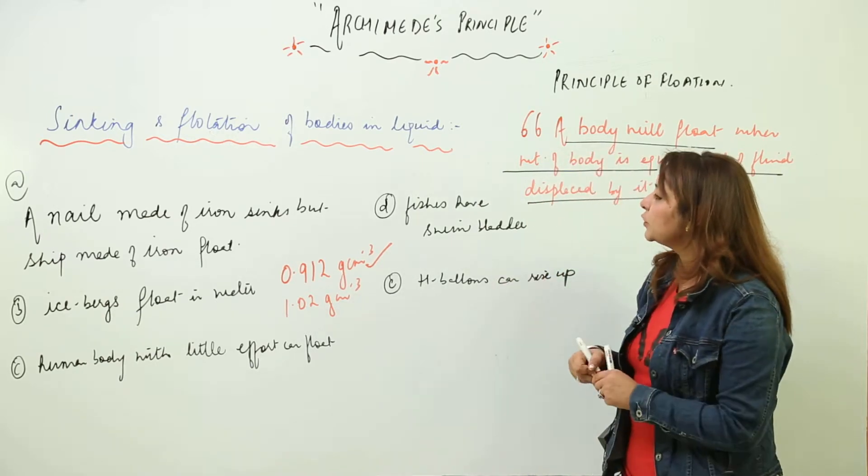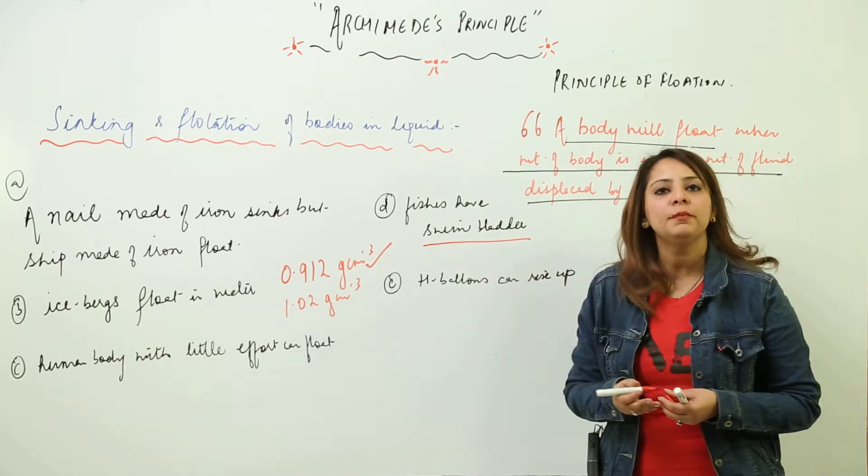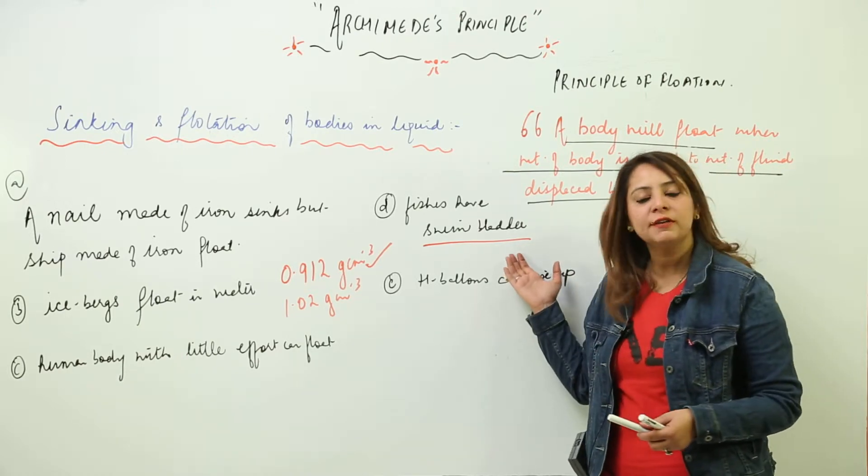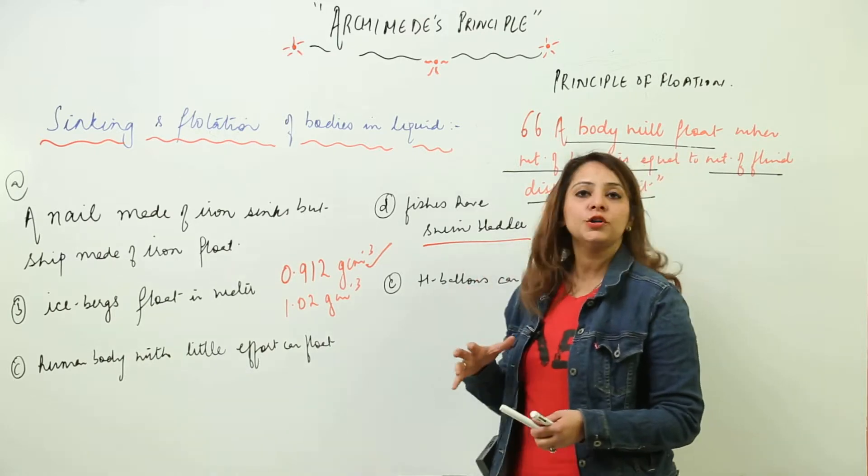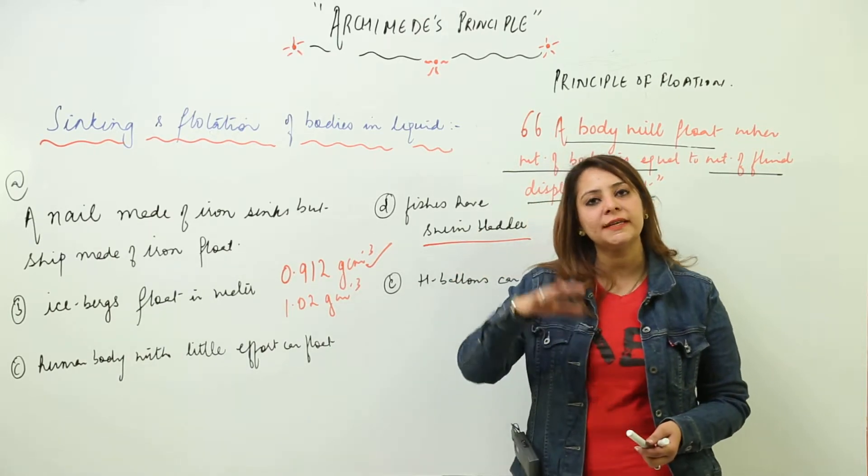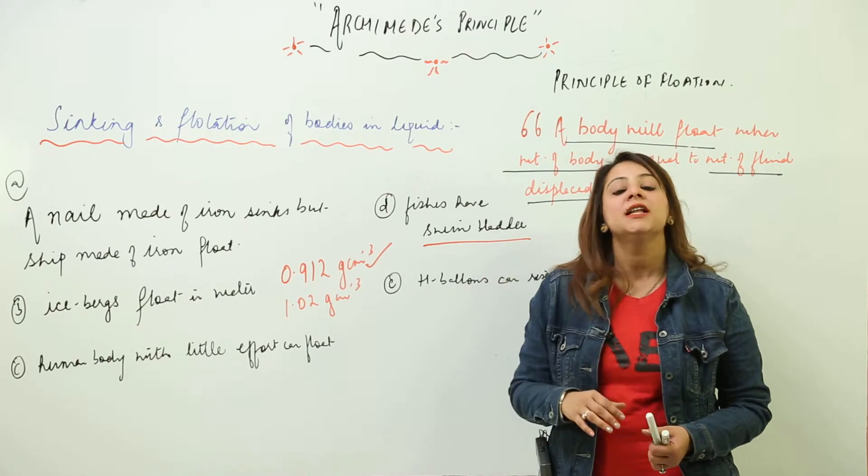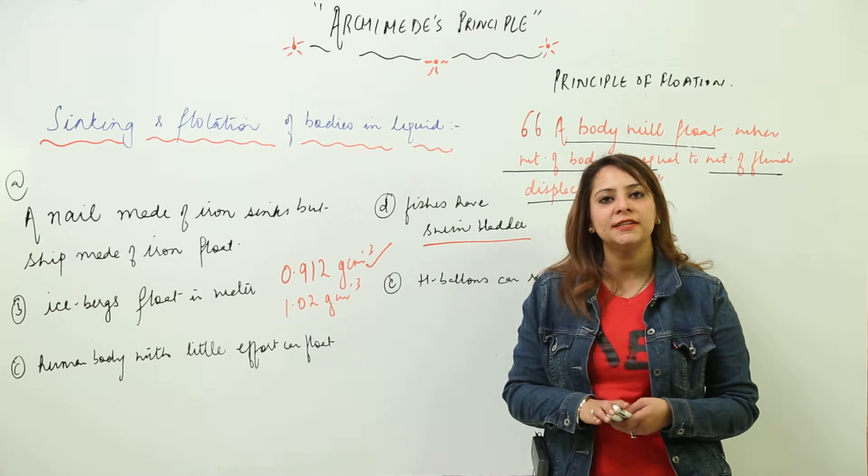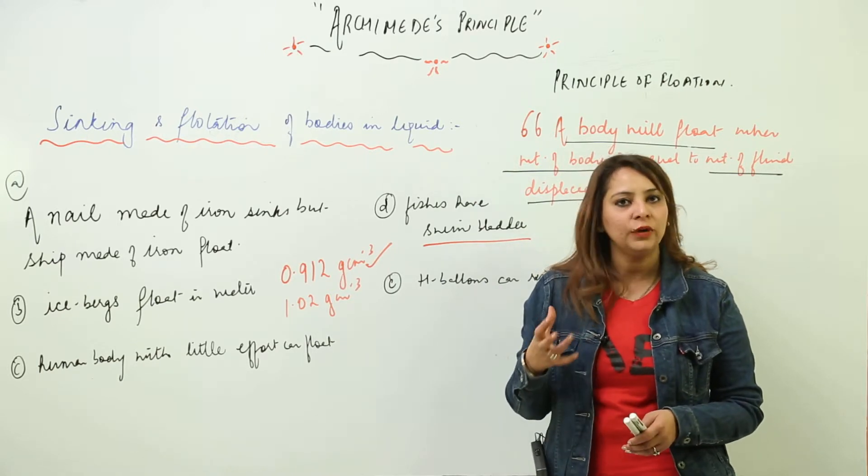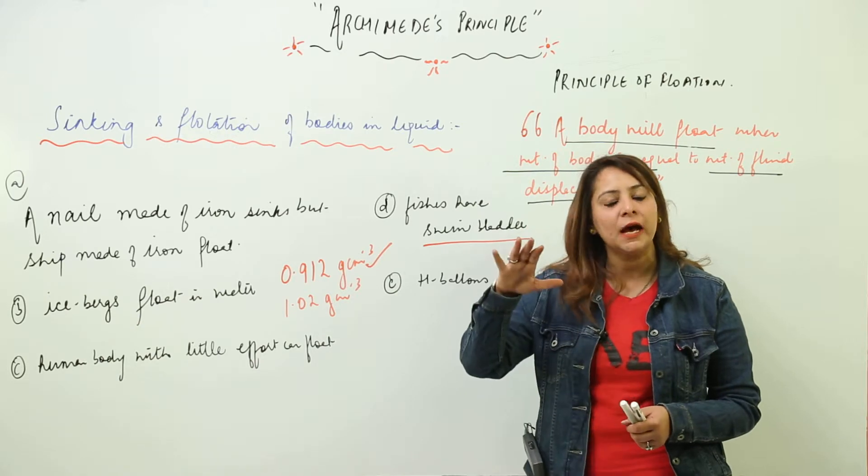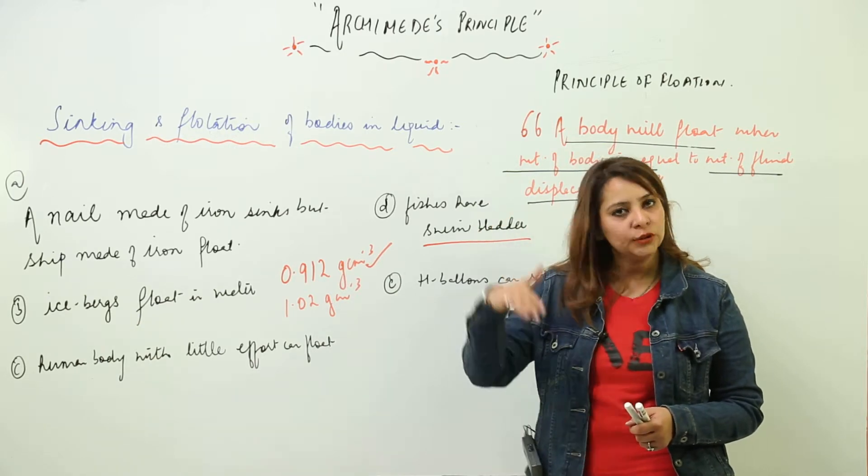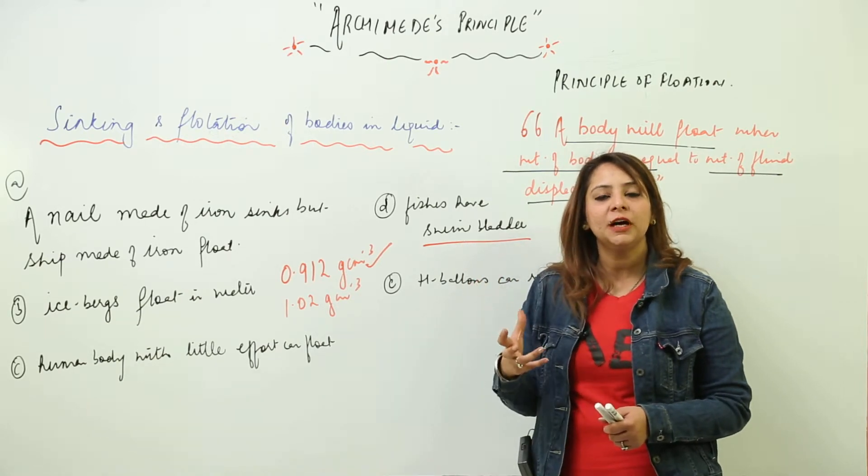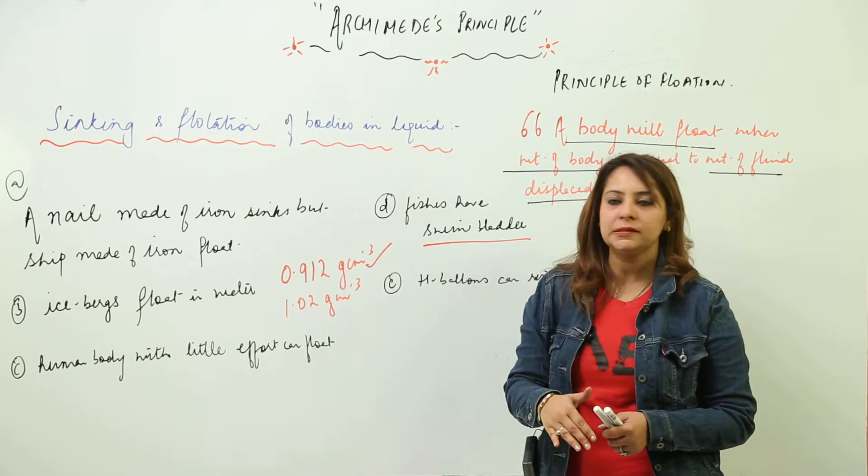Moreover, fishes have a special organ, the swim bladder, which makes them light. When fishes want to rise up to the surface of the water, they fill their swim bladder with gases, which decreases their density and they become light, and that is why they can rise up. But whenever they want to go down, they empty their bladder from the gases and their density becomes more, and that is why they can go down in the sea.